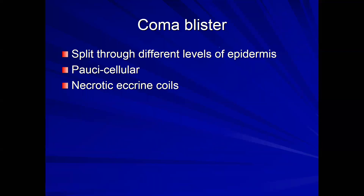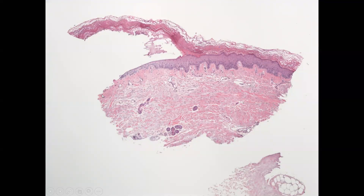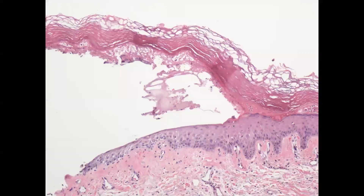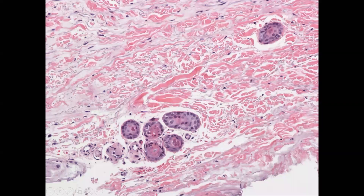A coma blister results from lack of perfusion — not autoimmune or inflammatory — so it is paucicellular. The key finding is necrotic eccrine coils pointing toward ischemia. The blister splits through multiple different layers — subepidermal, intraepidermal, and up through the cornified layer — making you suspicious of an outside-in process or ischemic event. Here you can see the ischemia to the eccrine coils: unhealthy-looking epithelial cells with fuzzy colors and purplish specks, indicating non-viable eccrine epithelium.